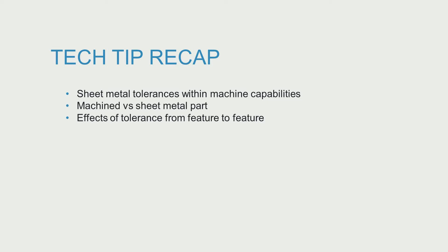Sheet metal parts have different tolerance expectations when compared to machined parts, which should be considered during the design process. Sheet metal parts are typically more cost effective than machined parts if tight tolerances are not required. When adding features to a design, it should be noted and taken into account the change in tolerance to maintain the design intent of the part, keeping its costs down and achieving the shortest lead times possible.